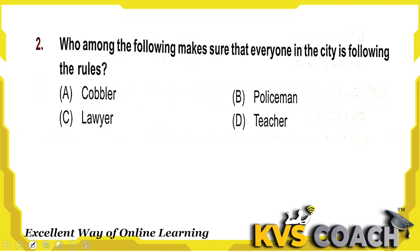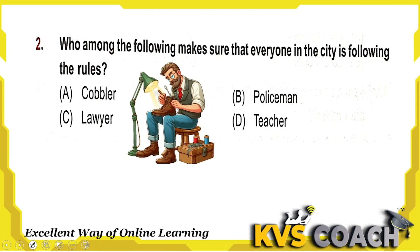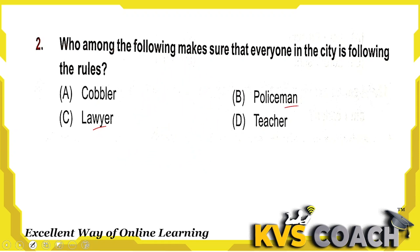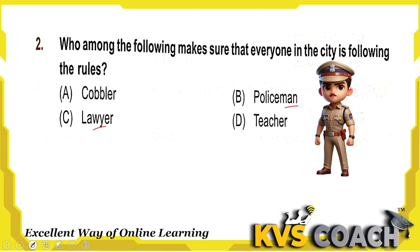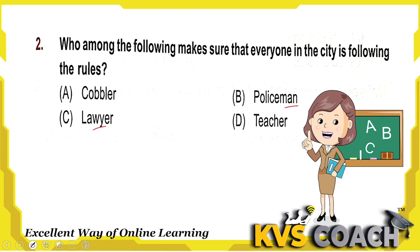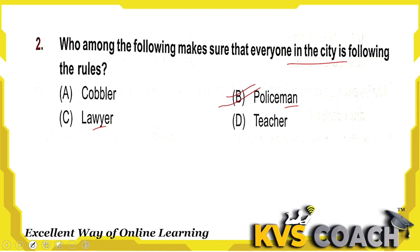Question two: who among the following makes sure that everyone in the city is following the rules? A cobbler mends shoes, a lawyer fights for justice, a policeman keeps the city safe, and a teacher teaches. The person who makes sure everyone is following the rules made by the government is the policeman. Option B is the right answer.